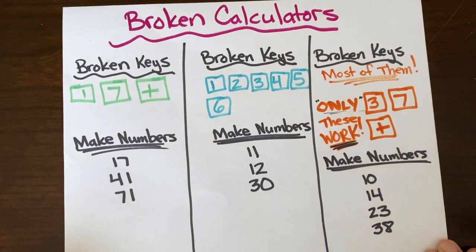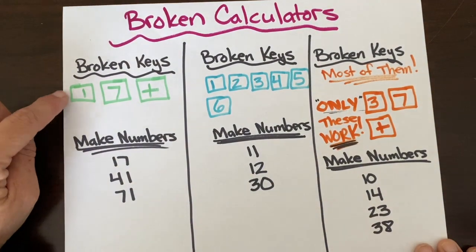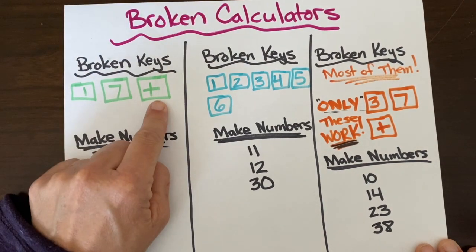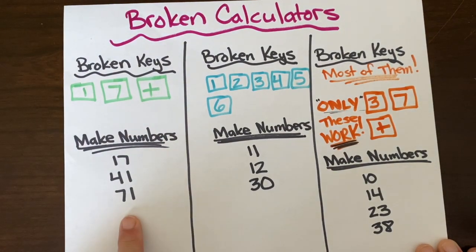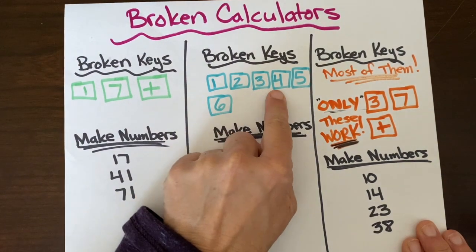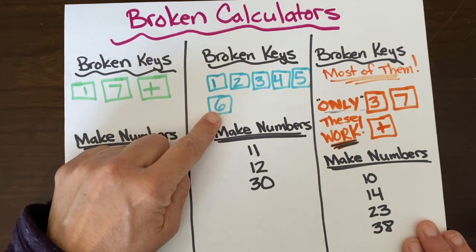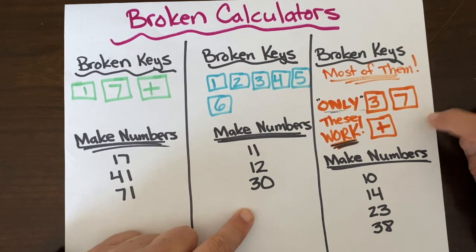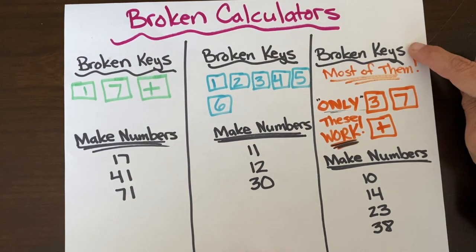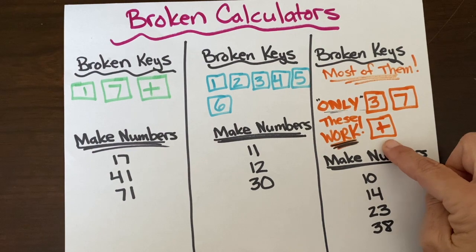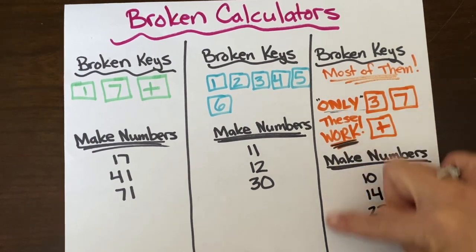Now that you know how to play Broken Calculator, here are a few more options. First: broken keys are 1, 7, and the plus symbol — here are your target numbers to make. Second: broken keys are 1, 2, 3, 4, 5, and 6 — here are your target numbers. And a third challenge that is very different: most keys are broken, and the only three keys that work are number 3, number 7, and the plus symbol. These are the numbers you're making.